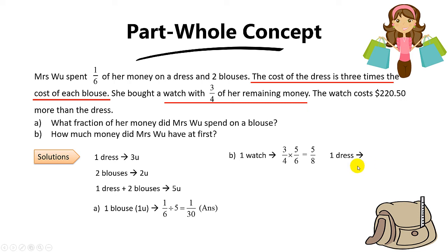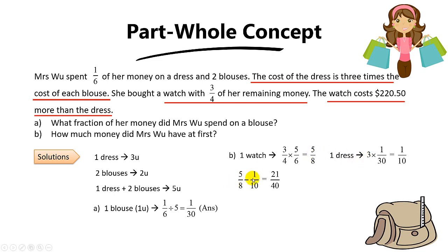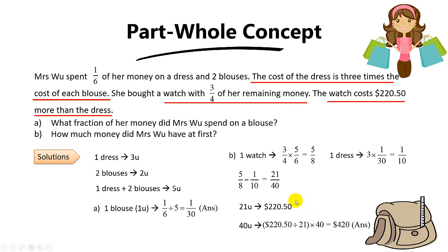Since the question gives the difference between the watch and the dress as $220.50, you find: 5/8 minus 1/10 equals 21/40. So 21/40 of her total money represents $220.50. To find 1 unit (1/40), take $220.50 divided by 21, which gives $10.50. Since 40 units is the original amount of money, multiply $10.50 by 40, and the answer is $420.